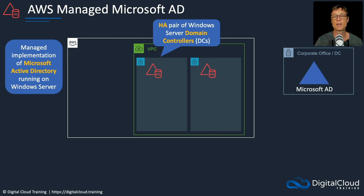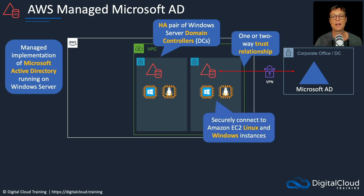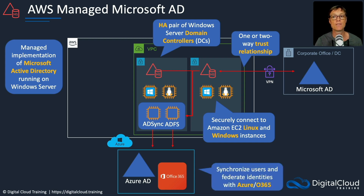We can connect a Microsoft AD over a Direct Connect or VPN connection, and then create trust relationships between those Active Directories. That enables authentication to work across different domains. We can securely connect EC2 instances running Linux and Windows to our domain controllers so they can join the Active Directory domain. We can also connect to the Azure cloud — Azure AD or Office 365 — using AD Sync and ADFS, which allows us to synchronize users and federate identities across those different services.